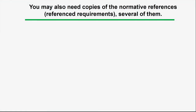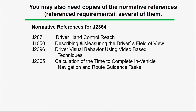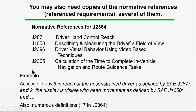In addition, documents have something called normative references — documents referred to that in some sense are part of the standard, and you must have copies of them. For J2364, there are documents on hand control reach, field of view, and some others. For example, the standard says that controls of interest are those that are accessible, as defined in SAE J287, and visible under certain circumstances as defined by J1050. So to implement SAE J2364, you also have to have copies of J287 and J1050. It's not unusual that to fully understand one standard, you often need copies of others.